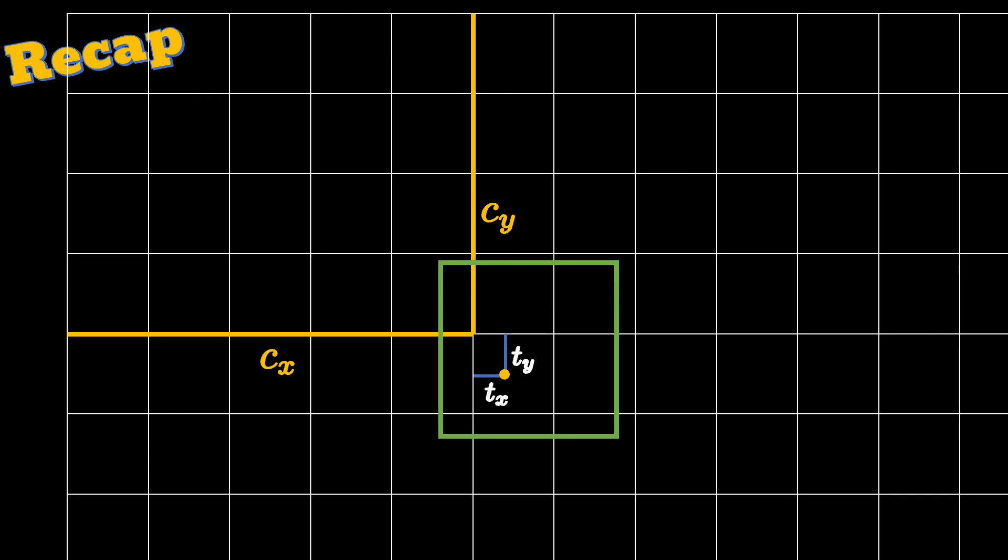That is, we want to predict TX and TY that are offsets from the boundaries of the grid cell. And the size of the grid cell is 1. So we want that TX and TY to be constrained between 0 and 1. This means that the final center X and Y for the grid cell that we will end up having is given by BX equals CX plus TX. And for Y coordinate BY equals CY plus TY.